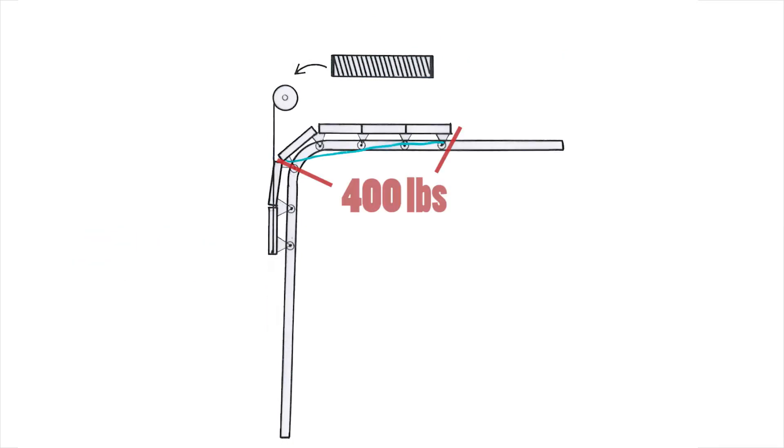When the door is raised until four sections are in the horizontal tracks, the spring unwinds until there are only two turns of tension. With only two turns of tension, the springs, drums, and cables are lifting only 200 pounds. This is the same door weight that is hanging in the vertical tracks.